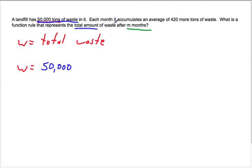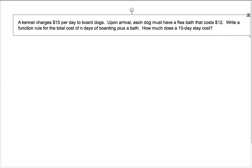And then, each month it accumulates an average of 420 more tons of waste. So 420 per month means we're going to have to add 420 more tons of waste each month, right? So we're going to have to add 420 more for each month. So for instance, if it was one month, it would be 420. If it was two months, it would be 840. What is the function rule that represents the total amount of waste after M months? So total amount of waste equals the amount we start with plus 420 more per month. That's it. Function rule done.